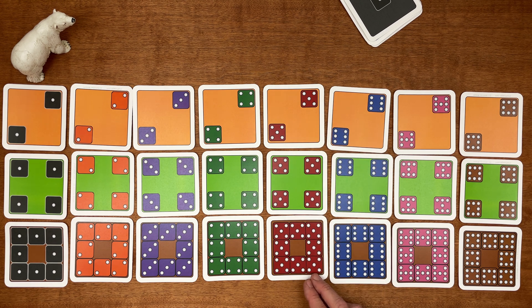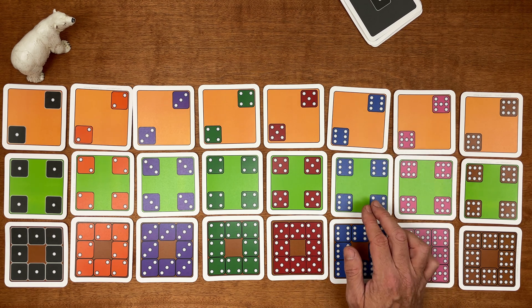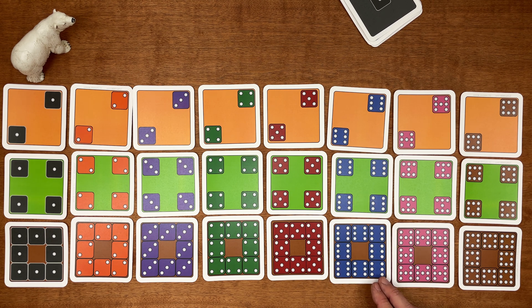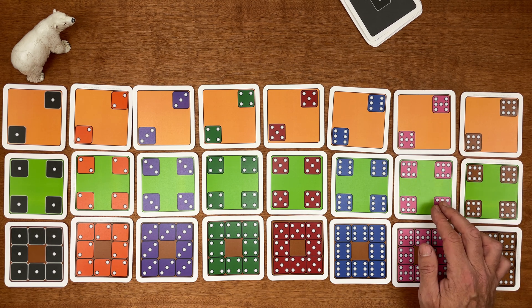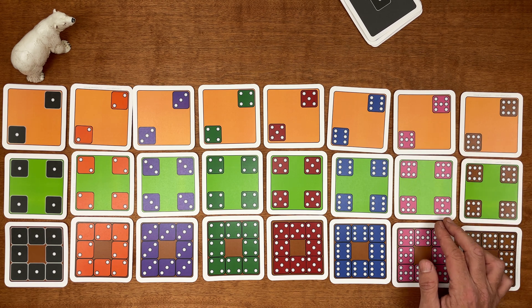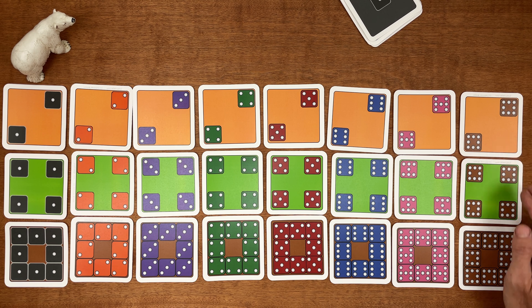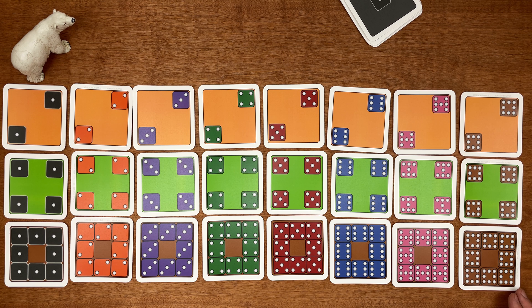And eight fives makes forty. Two sixes is twelve, four sixes makes twenty-four, and eight sixes makes forty-eight. Two sevens makes fourteen, four sevens makes twenty-eight, and eight sevens makes fifty-six. Two eights makes sixteen, four eights makes thirty-two, eight eights makes sixty-four. What a big number.